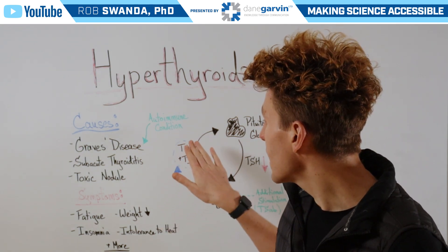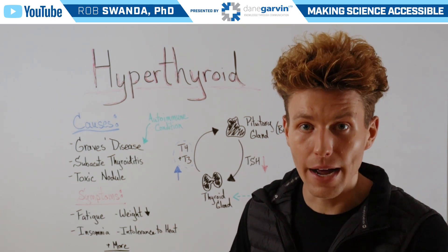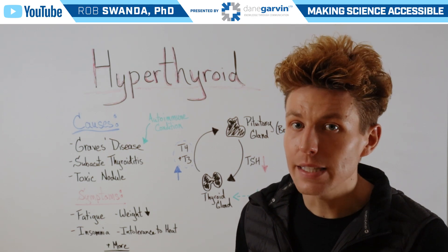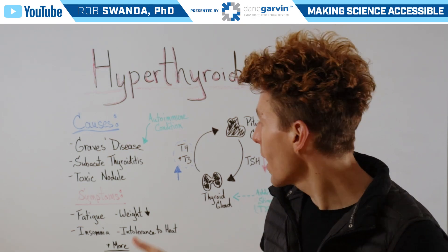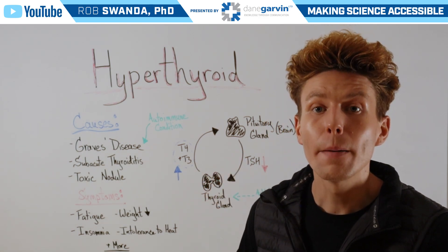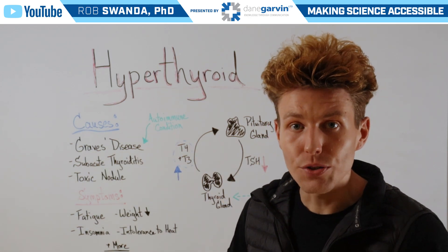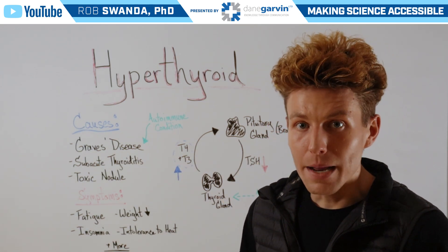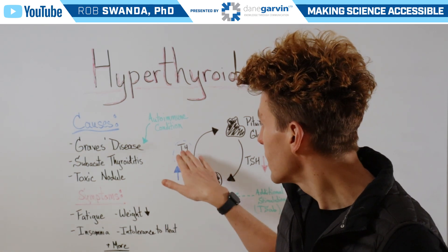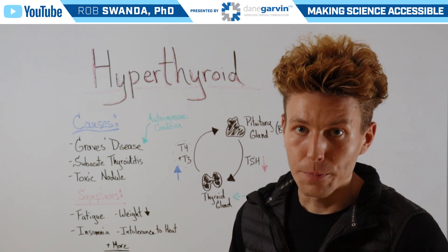So we see that T4 and T3 hormones in the body actually rise, but the pituitary gland notices that these levels are rising and tries to decrease the amount of thyroid stimulating hormone being released. So we see TSH levels decrease in the body. But because that thyroid gland is getting additional stimuli, the T4 and T3 levels in the body do not go back down.